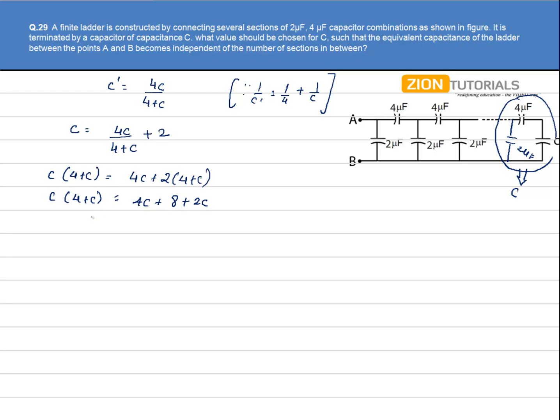Now on solving this equation for C, we get the value of C as minus 2 and 4uF. Now obviously minus 2 is not possible because the capacitance cannot be negative. So the answer for value of C is 4uF.